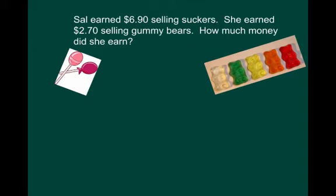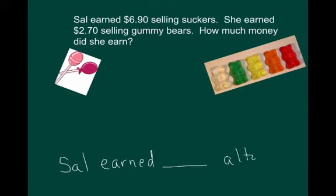Let's try another one. So here we have a problem about Sal earning $6.90 selling suckers. And then she earned some money also selling gummy bears. So how much money did she earn? What's the question asking me? I'm trying to find out how much Sal earned altogether. So Sal earned blank altogether. Remember how that answer statement helps kids set up the problem? Really thinking about what the question is asking them. So I'm going to go ahead and use a branching strategy for this.